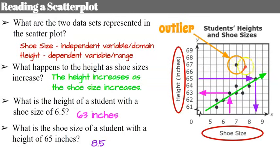Here is an outlier. You can see that this data point is outside the trend of the data. We have a positive correlation in our data, and this data point is pretty far away from the trend, so we would call this an outlier.